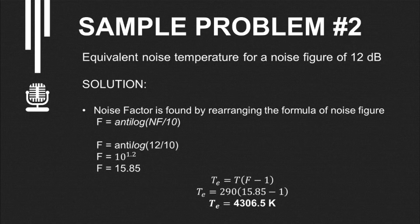Since the given is 12 decibels, which is NF, we can reverse it. Since NF equals 10 log F, to get F we use the formula antilog NF over 10. So antilog 12 over 10 equals 10 raised to 1.2, which equals 15.85.